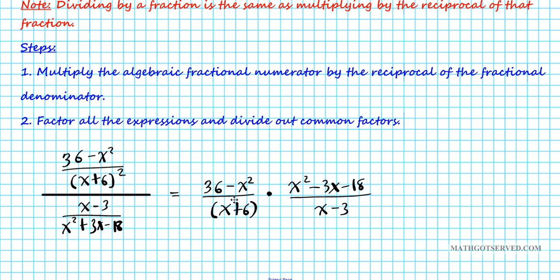You change your division to a times and you reciprocate the denominator. So it's now going to become x squared minus 3x minus 18 divided by x minus 3. All right, now we're going to start to factor. There's a square here. We're going to start to factor every single term. This is a prime binomial. We don't have to bother with that. Let's take a look at this first: 36 minus x squared. Now, do you remember the difference of squares? The difference of squares formula.